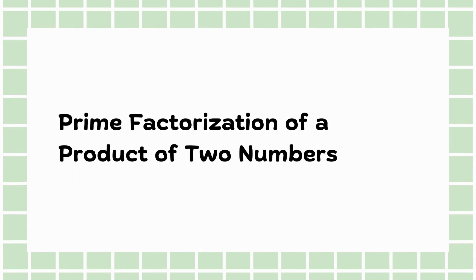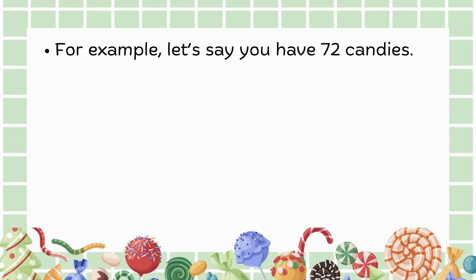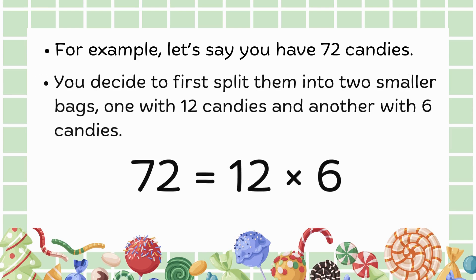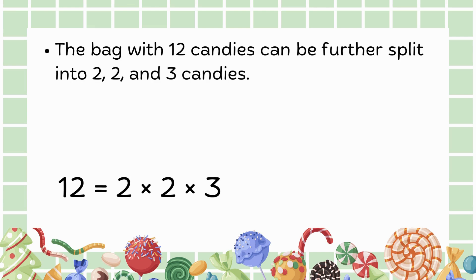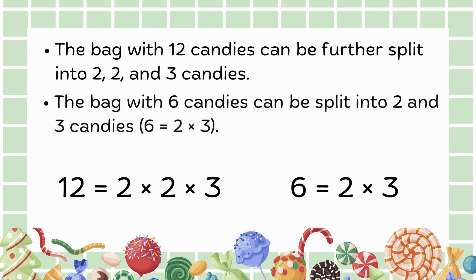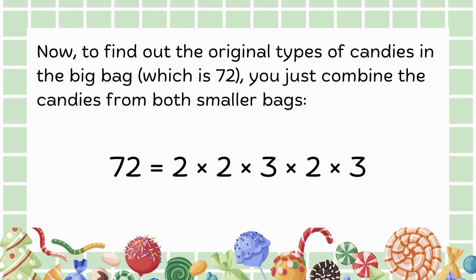Let's look at prime factorization of a product of 2 numbers. If you have 72 candies, you might first split them into 2 smaller bags, one with 12 candies and another with 6 candies. You can further split the bag with 12 candies into 2, 2 and 3 candies, and the bag with 6 candies can be split into 2 and 3 candies. By combining the candies from both bags, the prime factorization of 72 is 2 times 2 times 2 times 3 times 3.